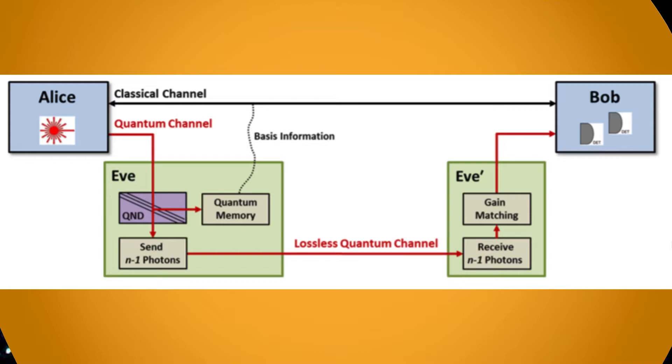If n is less than or equal to 1, Eve blocks the pulse and sends nothing to Bob. If n is greater than or equal to 2, Eve stores one of the photons in quantum memory and sends the remaining n-1 photons to Bob.